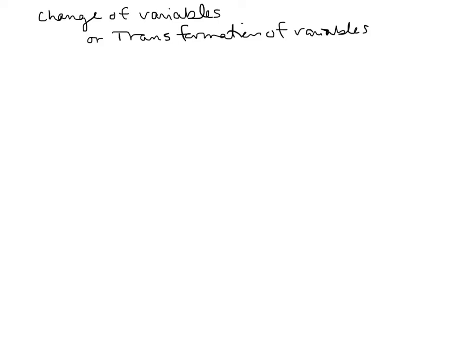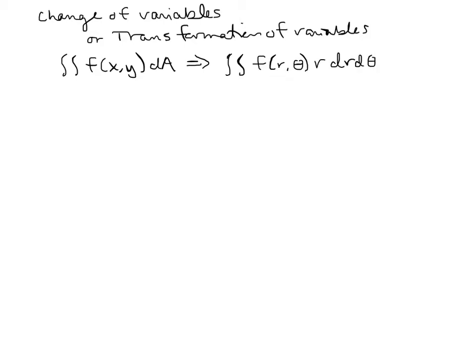The next thing we're going to talk about is change of variables or transformation of variables. You've already seen an example of this: we could take an integral with x's and y's and put it instead into r's and thetas, transforming our function and tacking on that r dr dtheta. So switching to polar coordinates is a transformation of variables — it takes x's and y's and spits out r's and thetas, using functions like x = r cosine theta, y = r sine theta.